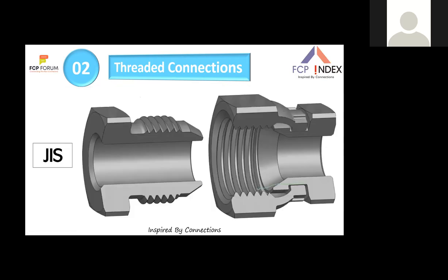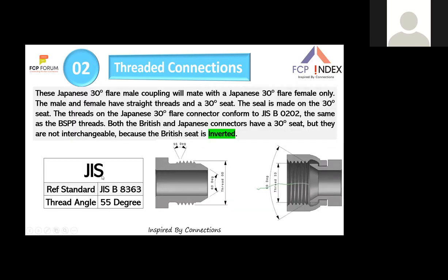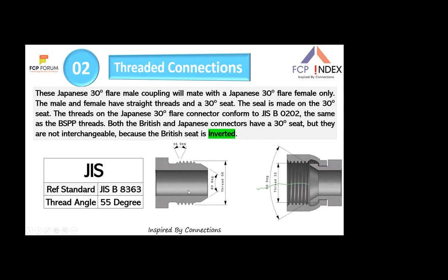JIS (Japanese Industrial Standard) 30-degree flare: the male has a flare and the female has an internal 30-degree flare. Both male and female have straight threads and a 30-degree seat — the seal is made on the 30-degree seat. It conforms to JIS B0202. Although both British (BSP) and Japanese connectors have a 30-degree seat, they are not interchangeable because the British seat is inverted relative to the JIS seat. The thread angle is 55 degrees.